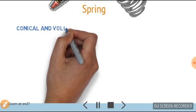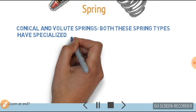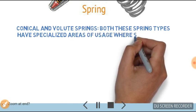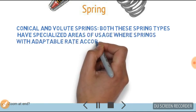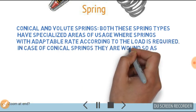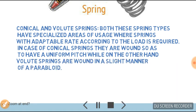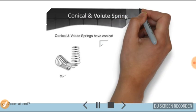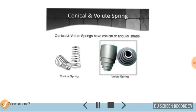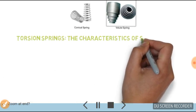Conical and volute springs both have a specialized area of usage where springs with an adaptable rate according to their load is required. In case of conical springs, they are wound so as to have a uniform pitch, while on the other hand, volute springs are wound in a specific way. This is an example of a conical or volute spring as shown in the figure.